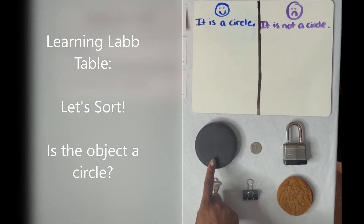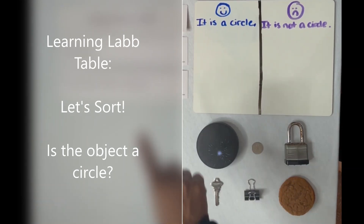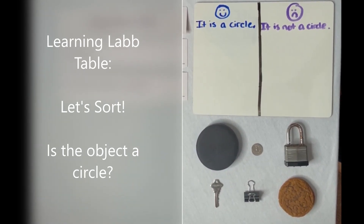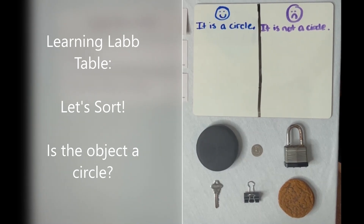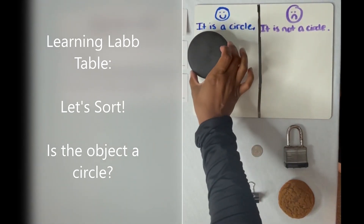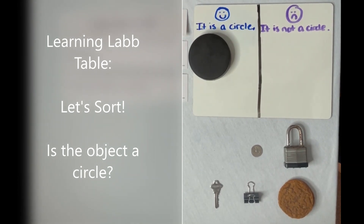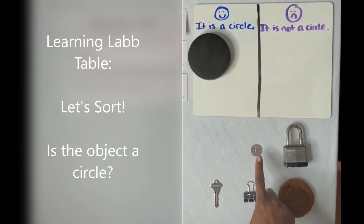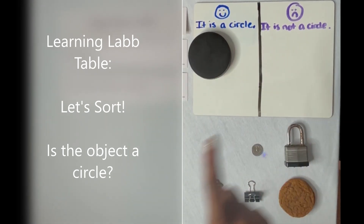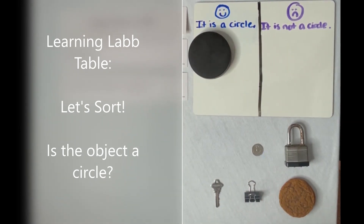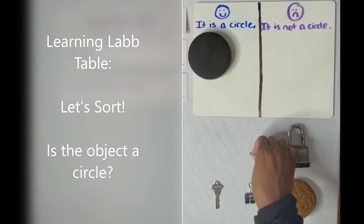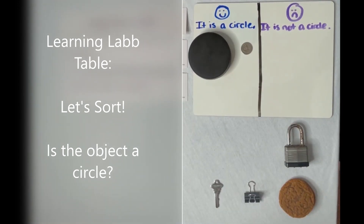Let's start with the top. Is it round like a circle with no sides and no corners? Correct, it is. So we're going to place it right there. Next I have the quarter. Is it round with no sides and no corners? Absolutely. We'll move it right there.